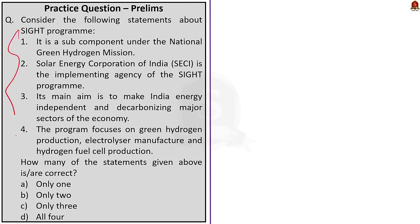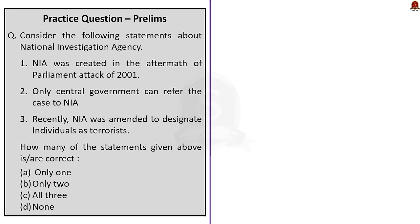The next question gives four statements and you have to find how many are correct. The first three statements are correct: the SIGHT program is a sub-component under the National Green Hydrogen Mission; SECI is the implementing agency of the program; its aim is to make India energy independent and decarbonize major sectors of the economy. The fourth statement says the program focuses on green hydrogen production, electrolyzer manufacture, and hydrogen fuel cell production — this is incorrect, because the SIGHT program has only two components: green hydrogen production and electrolyzer manufacturing. Hydrogen fuel cell production is not a component. So the correct answer is option C, only three. The final question is about NIA — three statements are given and you have to find how many are correct. The correct answer is option D: all the statements given are incorrect.